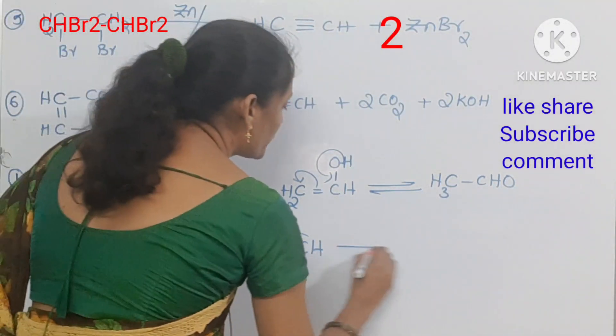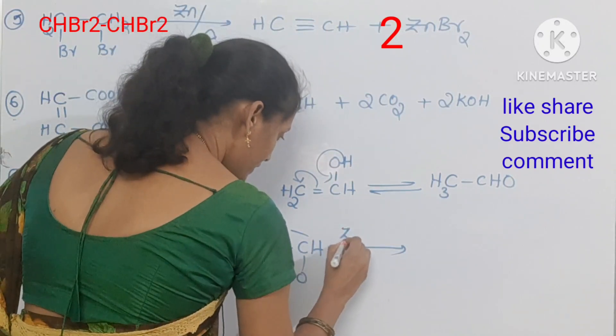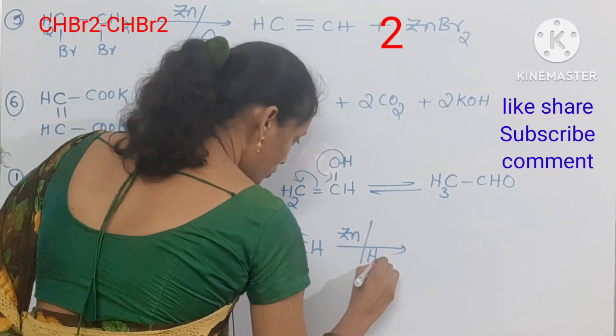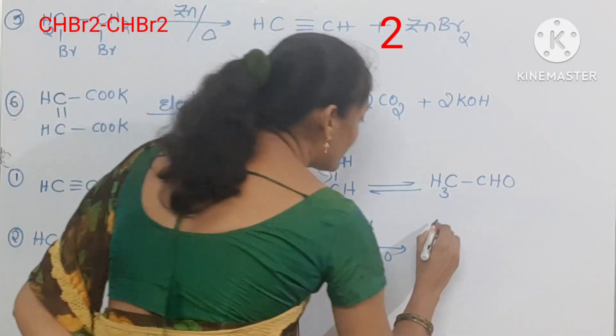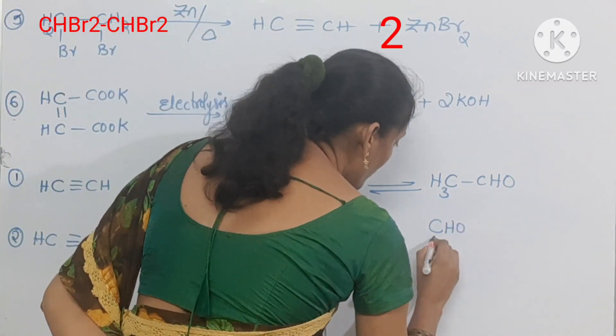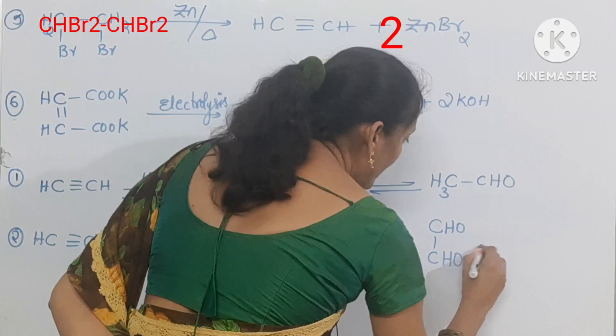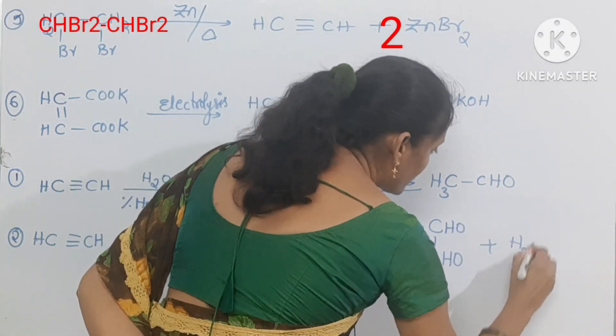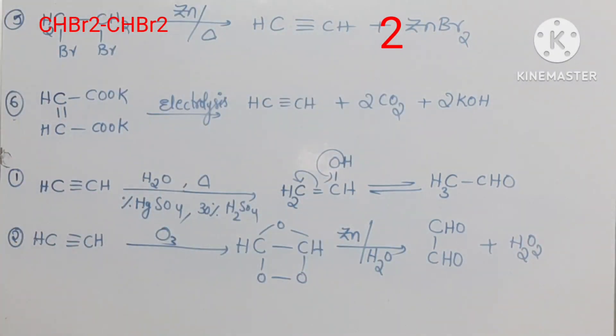And this one is going to be reacting with zinc in presence of H2O. You will get glyoxal CHO-CHO and the byproduct is H2O2 hydrogen peroxide.